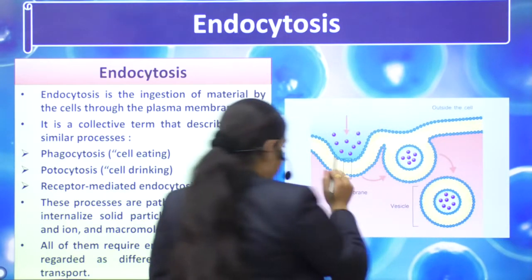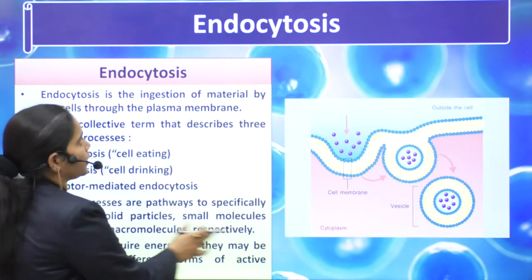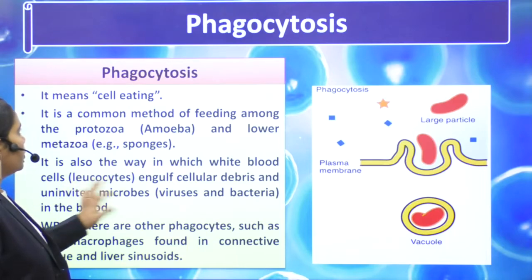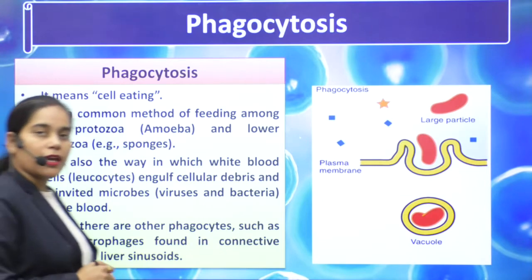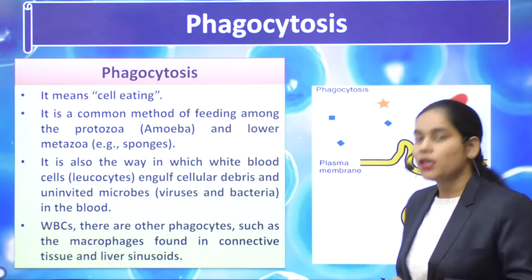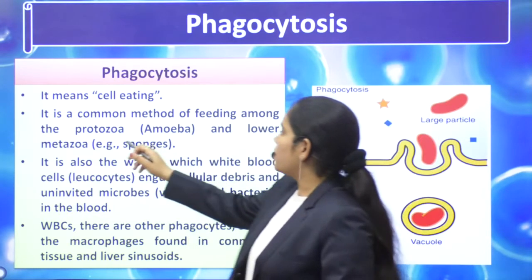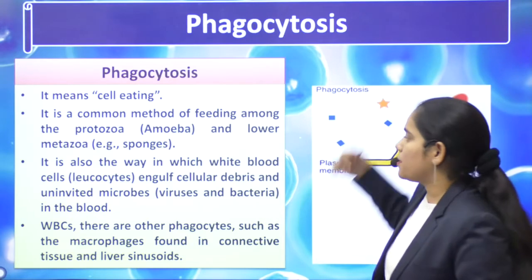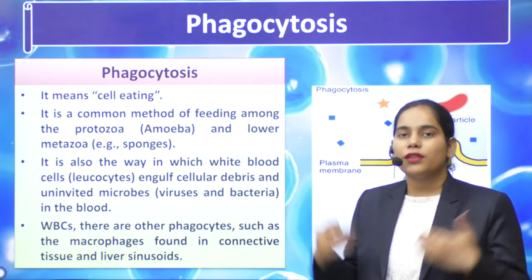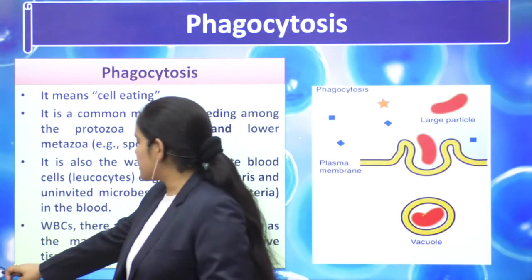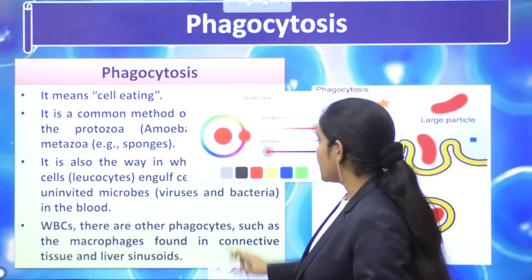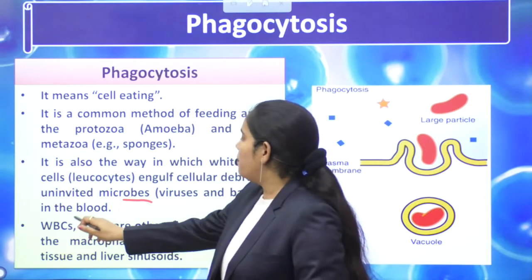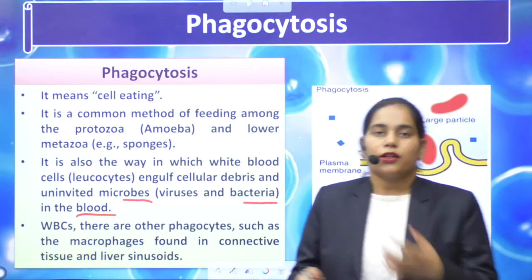What is the process? How does it follow? This is your cell. Now in phagocytosis — it means cell eating. How does the cell consume any solid particle? It is a common method of feeding among the protozoa and lower metazoa. We discussed amoeba — it is a unicellular organism — so this process follows in amoeba and metazoa.